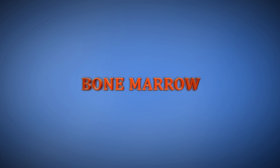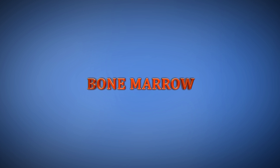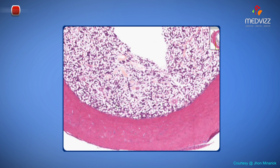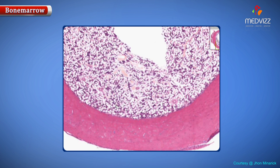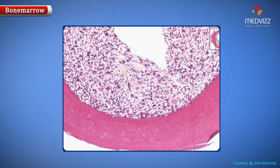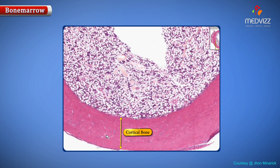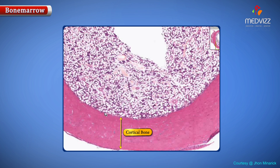Bone marrow. Here we have a specialized type of connective tissue known as bone. Bone can be very, very dense, or what they call cortical bone, which you see here as this pink band in the lower part of the field. Or you can have a looser type of bone, which goes by a wide variety of names, which we don't see here, but we'll get to later.